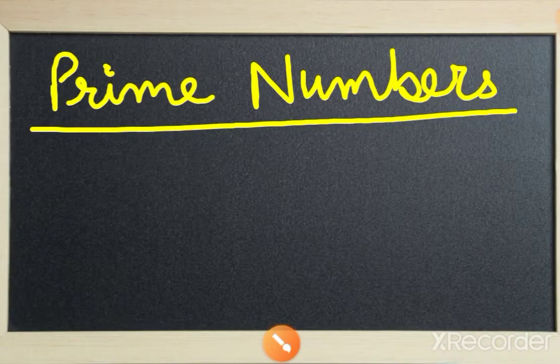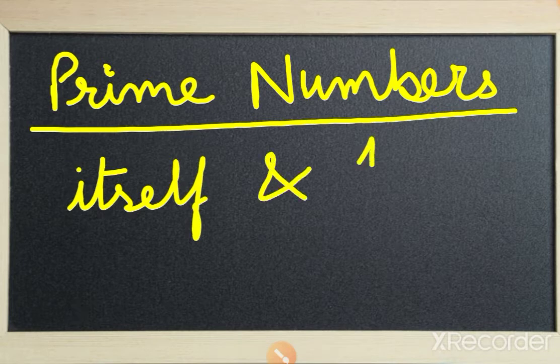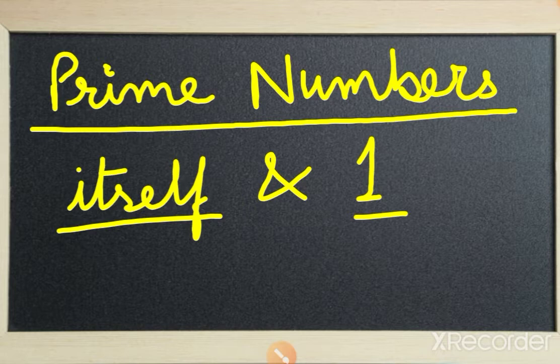Hello students, today we are going to discuss about prime numbers. What are prime numbers? A prime number is one that can be divided exactly by itself or one. A number divided by itself and one has exactly two factors. These numbers are known as prime numbers.